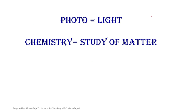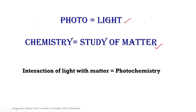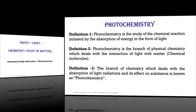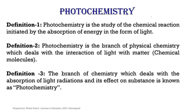As you see the word photochemistry — photo means light and chemistry means study of matter. Hence, photochemistry is defined as the interaction of light with matter. We can define photochemistry in three different ways. In definition 1, photochemistry is the study of chemical reactions initiated by the absorption of energy in the form of light.